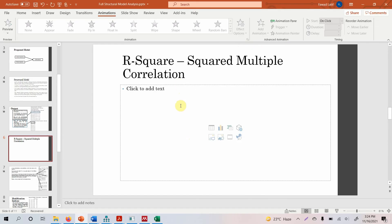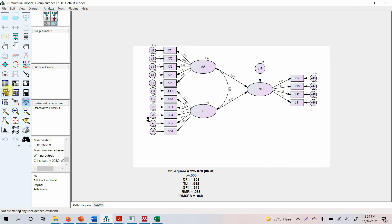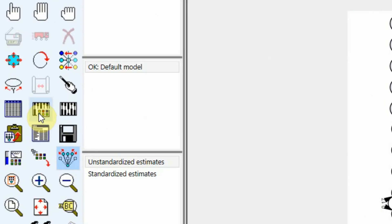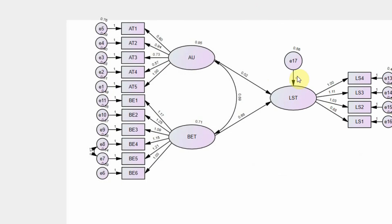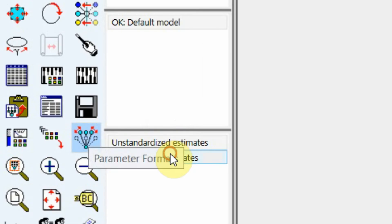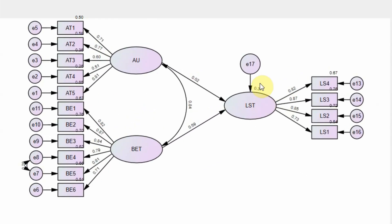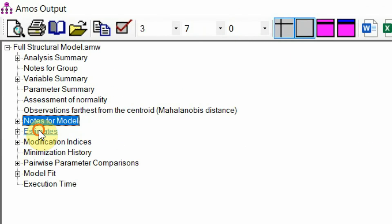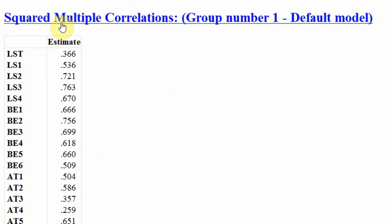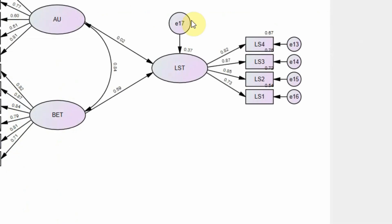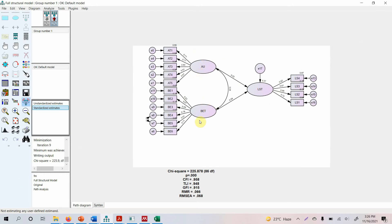Moving on — your R-square. Let's go to the output; we do not see any R-square here. What we need to do is go to Analysis Properties > Output > Squared Multiple Correlation. This is already checked, but we have to go to Standardized Estimates to see it. 0.37 is your squared multiple correlation — that is your R-square. Go to Estimates and here it is: Squared Multiple Correlation for LST (life satisfaction) is 0.366, which rounds to 0.37. So, 37% of the change in life satisfaction can be accounted for by authentic leadership and ethical behavior.